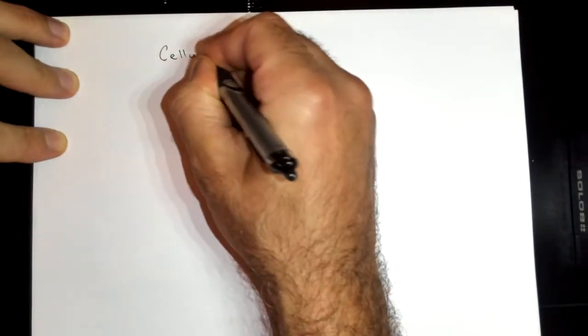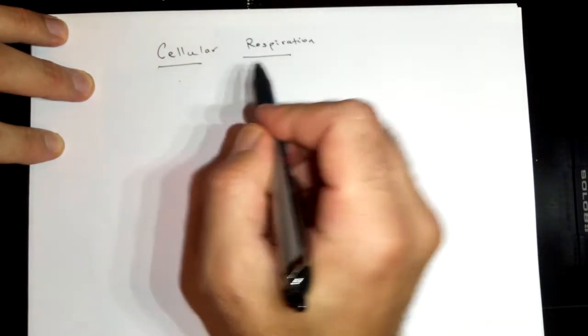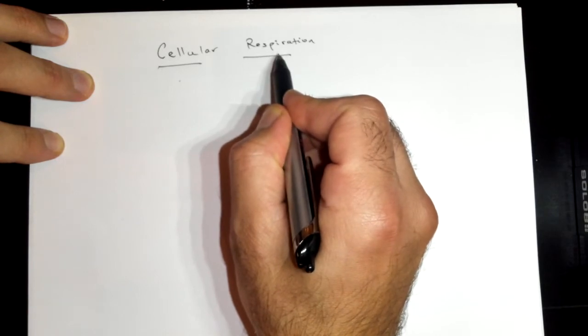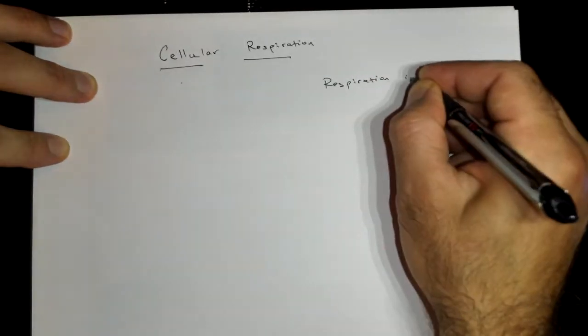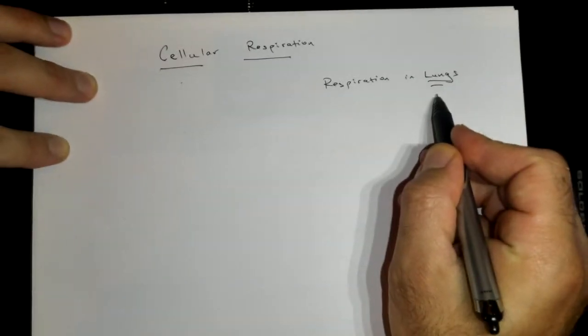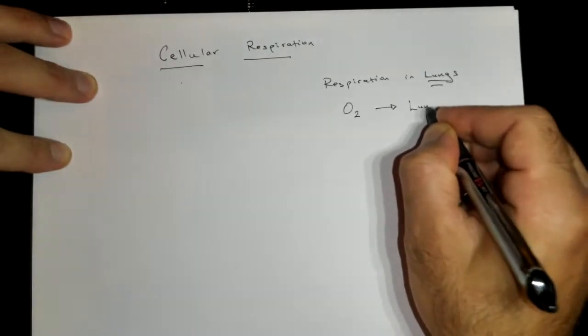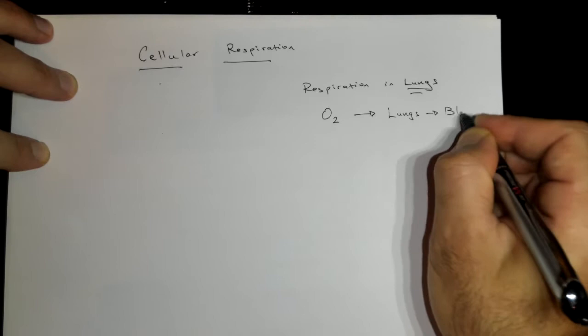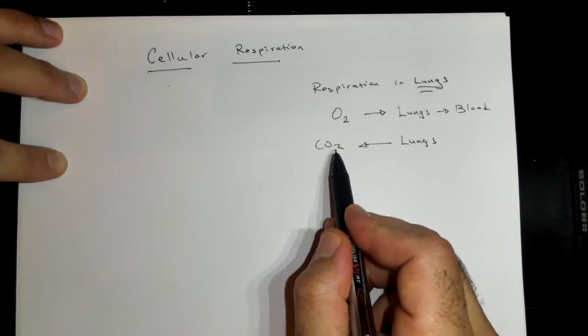We're going to go over cellular respiration. First, let's understand why we call it cellular respiration. Most of you know that respiration refers to breathing — respiration in the lungs. When we do respiration in the lungs, oxygen or O2 goes toward the lungs and then to the blood, and from the lungs we release CO2. So this is the type of respiration that takes place in the lungs.